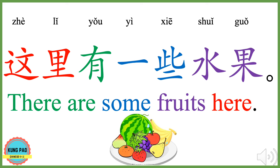这里有一些水果。 这里 means here. 有 means have, has, there is, or there are. 一些 means some. 水果 means fruit, or fruits.